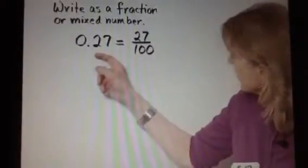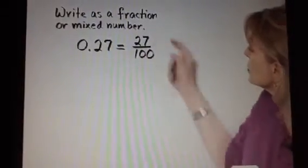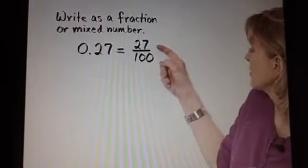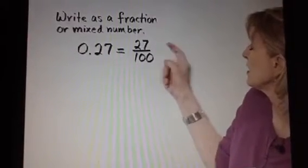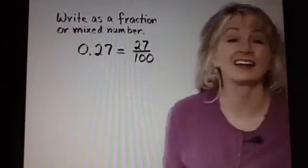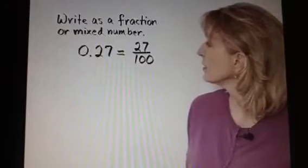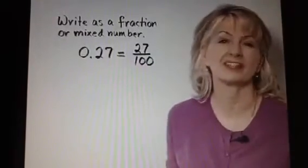27 hundredths, we should check and see if this can be simplified. But 27 has factors of 3, and 3 does not divide into 100 evenly. So here I have written this as an equivalent fraction.